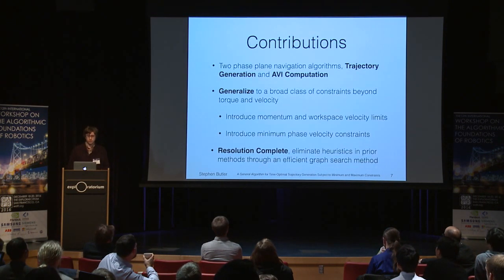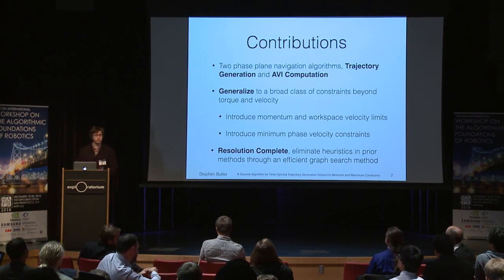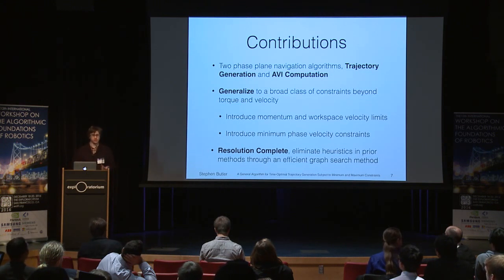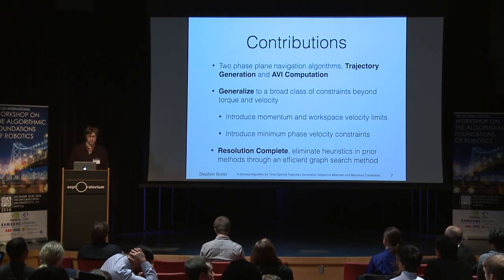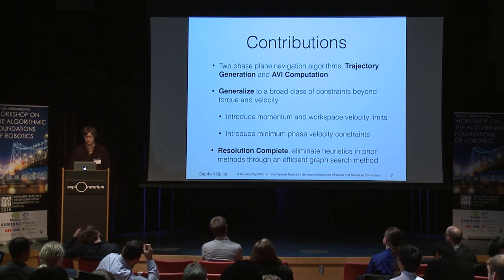Our contributions: we present two algorithms, one for trajectory generation and one for AVI computation. Both generalize to a broad class of constraints beyond torque and velocity. As an example, we introduce momentum and workspace velocity limits, and also minimum phase velocity constraints that were largely ignored in prior work. Finally, we are resolution complete — we achieve this by eliminating the heuristics in prior methods through an efficient graph search method.